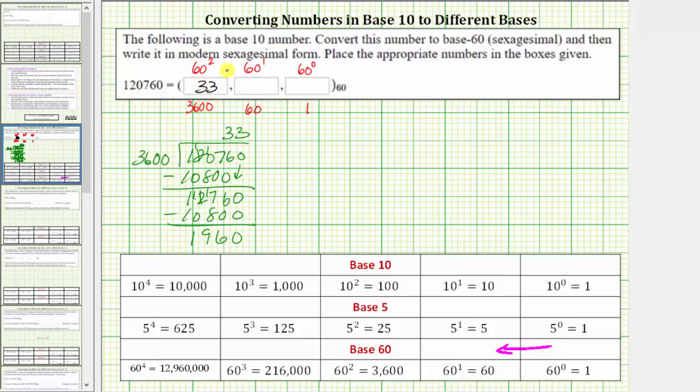To find the whole number in the 60s place value, we now divide the remainder by 60. So now we divide 1,960 by 60.